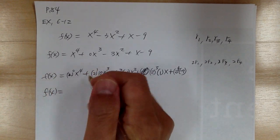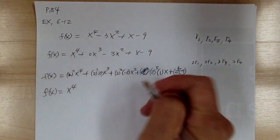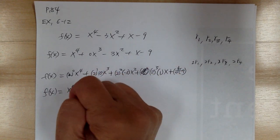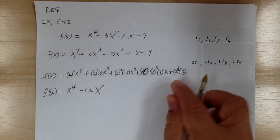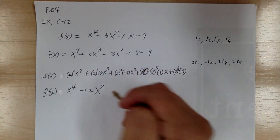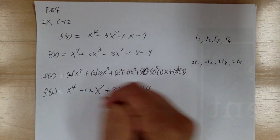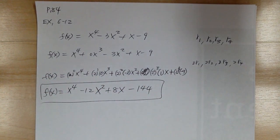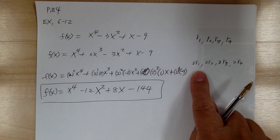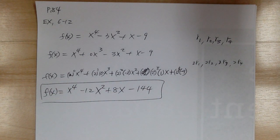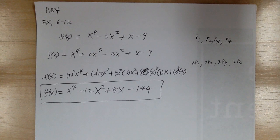So f(x) equals x to the four — the zero term is gone — then two squared times negative three gives minus 12x squared, two cubed times one gives plus 8x, and two to the fourth times negative nine gives minus 144. So the answer is x to the four minus 12x squared plus 8x minus 144. That's what you get when you double the roots.